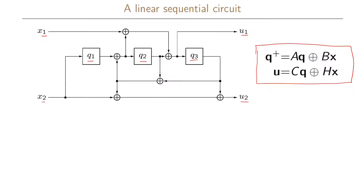We want to write our next state as a linear function of the current state and the input, and we want to write our output as a linear function of the current state and the input. The matrices a, b, c, and h are what we now want to derive.